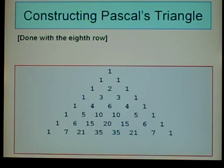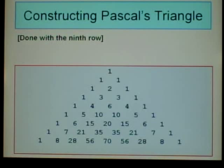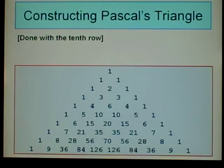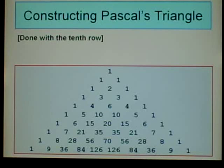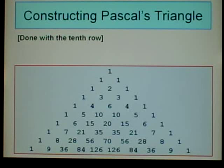I'm not going to go through all the details, but if you created an eighth row, a ninth row, or a tenth row, those would follow the same pattern. You can try the eighth, ninth, and tenth rows for yourself and see if you come up with the same results. And that's it for constructing Pascal's Triangle.